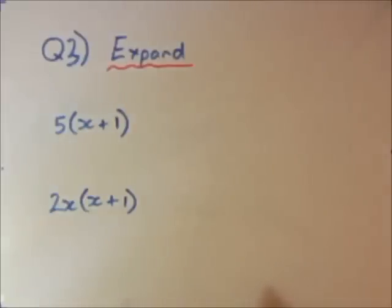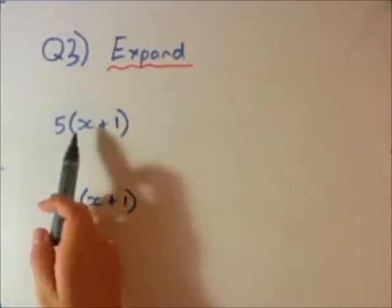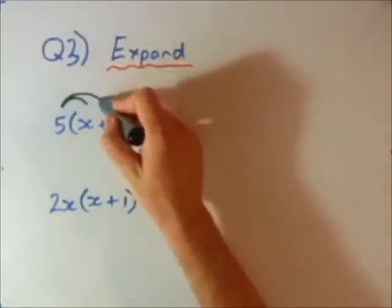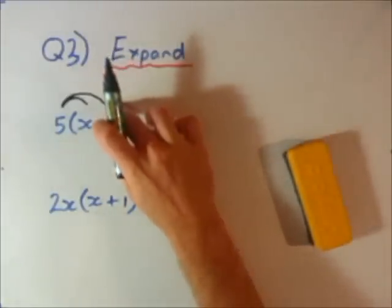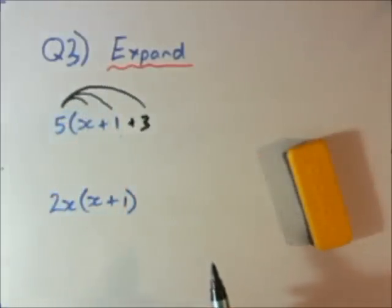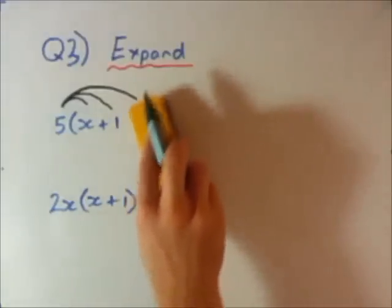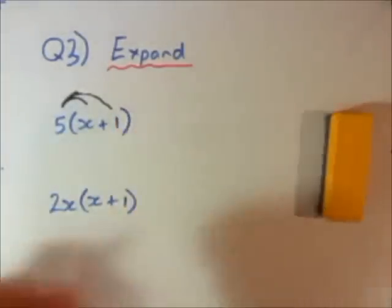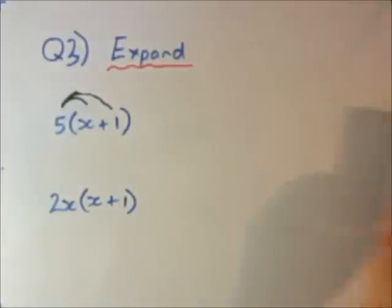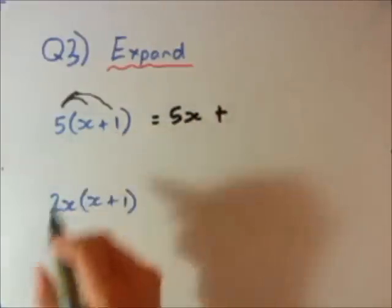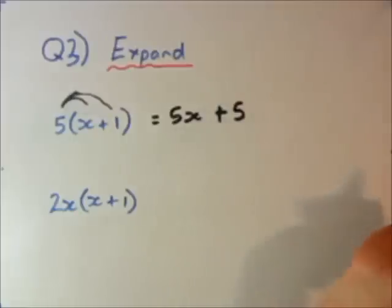Question 3, now we're expanding brackets. So the key rule, when you're expanding brackets, is what's at the front of the bracket, you times by every term in the bracket. So the 5 will times by the x, and then the 5 will also times by the 1. So let's go ahead and do this. 5 times x is 5x, and then you've got to add 5 times 1 is 5. And there's the answer to the first one.